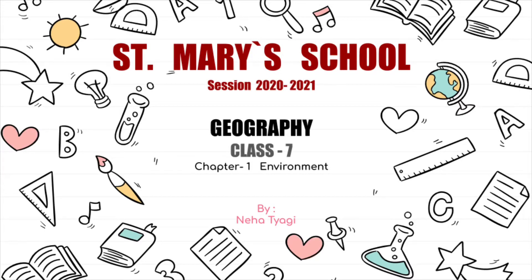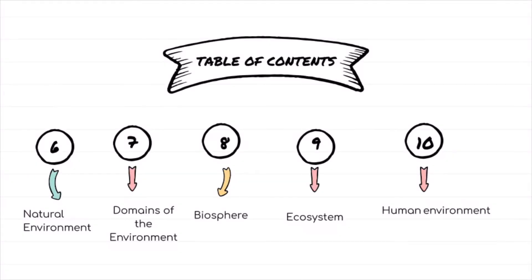Hello students, welcome back to the class. This is session number 2 for Chapter 1: Environment, Geography, Class 7. This is in continuation to session 1, so in order to have a better understanding, you need to go through session 1 first. Today we are going to cover the remaining topics: number 6 natural environment, number 7 domains of the environment, number 8 biosphere, number 9 ecosystem, and number 10 human environment.